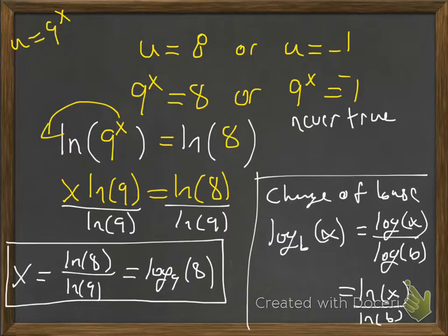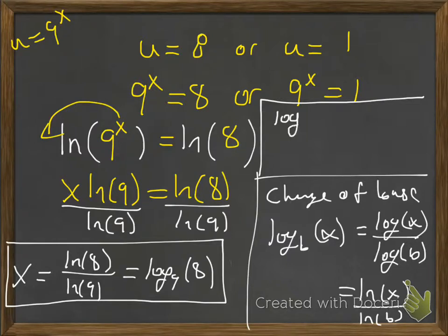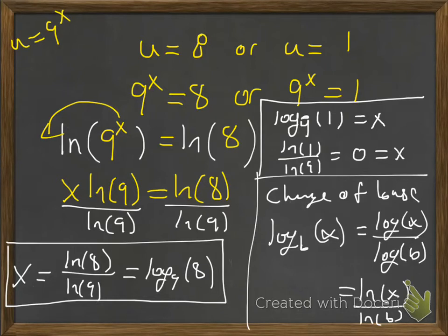However, for this particular problem, we didn't get negative 1. We got positive 1. So this is doable. And we can illustrate the change of base formula here. So if I rewrite, this is going to be log base 9 of 1 equals x. And we can do the change of base just to illustrate it. So it's ln(1) over ln(9). And you all remember that when we take the natural log or log or whatever of 1, it's 0. So there's our other solution. The solution is x equals 0. Thank you.